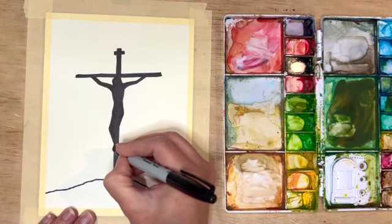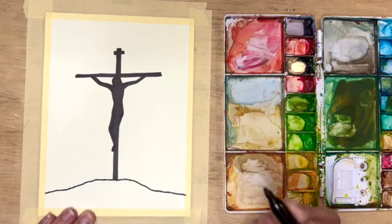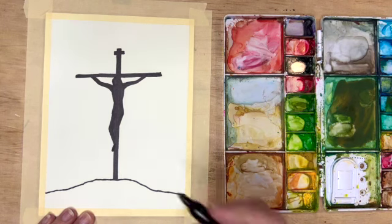If you want to kind of indicate the feet you can add just a little bump kind of coming out on the side of the cross towards the bottom and that indicates where the feet are.